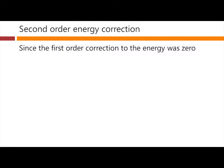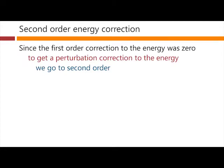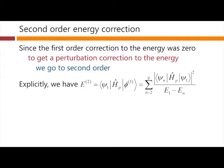The second-order energy correction, well, the first-order one was zero, but to get a perturbation correction to the energy, we go to the second order. And explicitly, we have for our formula that the second-order correction is, for our first state, ψ_1 H_p times the first-order wave function correction. And formally, we can write that all out here. Again, we're summing just up to some finite q for purely practical reasons.